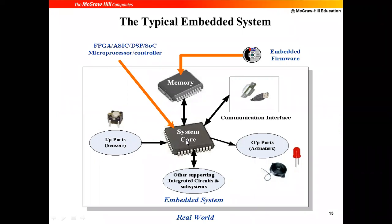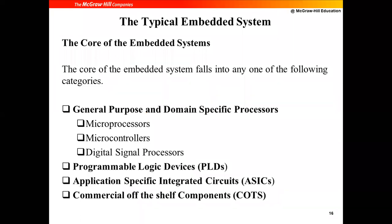This is the system core. We need to study each and every component in detail. In this particular chapter, you'll be studying what the different types of system core are, which are the different types of input sensors as well as output actuators, different types of memory, and the various devices which can be interfaced to the controller. The core of an embedded system basically falls under four main categories.